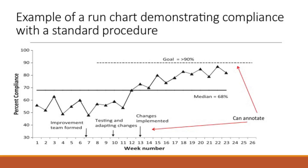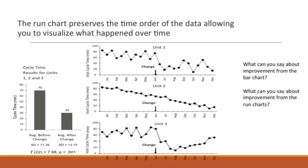What's also interesting in this display is that you're able to annotate — you can write in where you formed your improvement team and where you started testing different changes. You can also put in a line showing the goal you're trying to achieve. This also illustrates how the run chart preserves the time order of the data, which allows you to visualize what happened over time compared to a bar chart shown on the left-hand side of the slide.